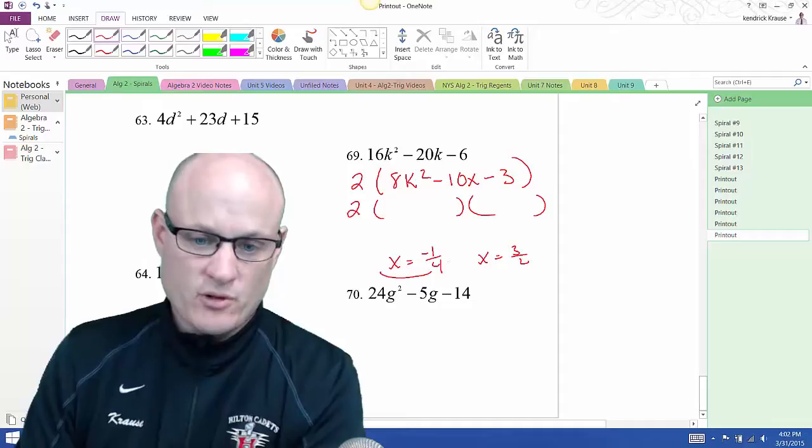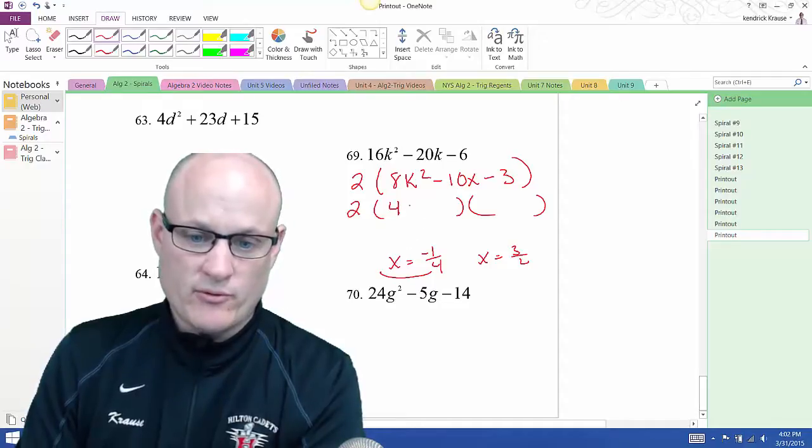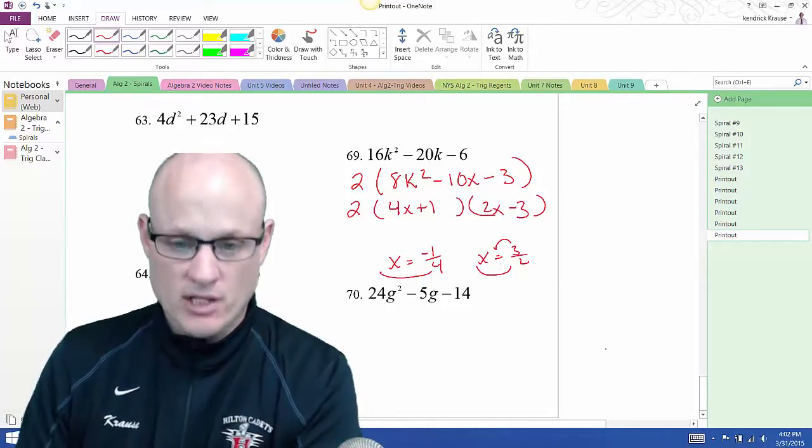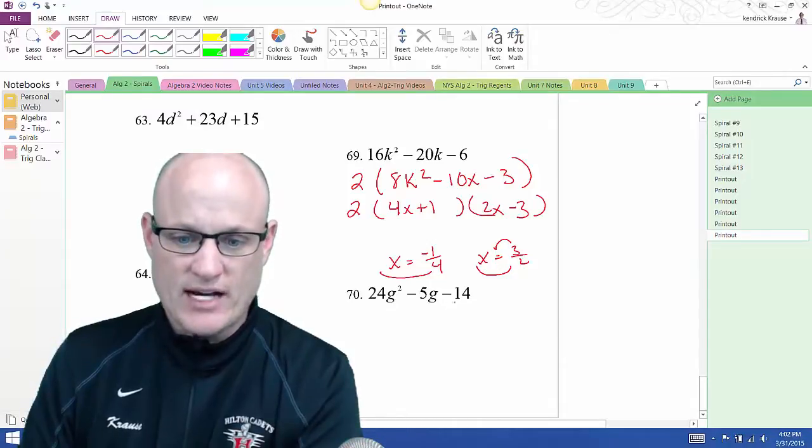8, negative 10, and negative 3. Was it 8x² - 10x - 3? Yes it was. Hit enter and there it is: negative 1 fourth and 3 halves. So 4 goes in front and bring the 1 over, so it's 4x + 1. Bring the 2 over, it's 2x, and bring the 3 over minus 3. There it is.